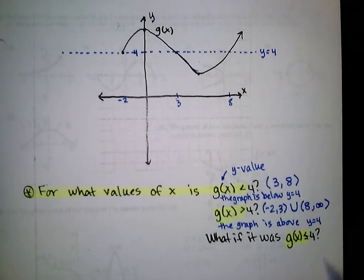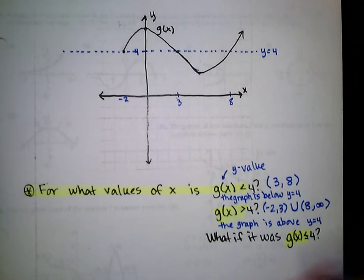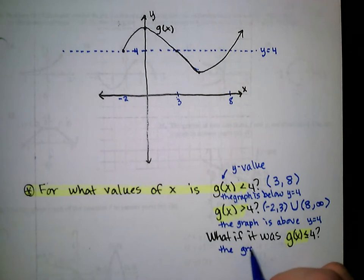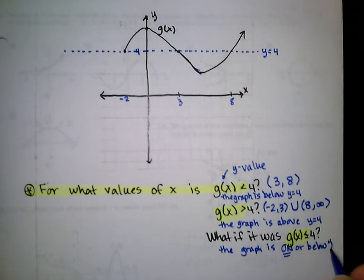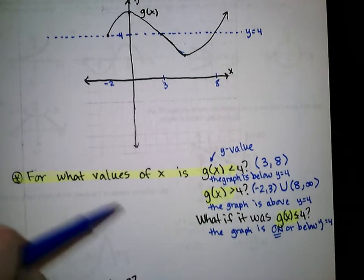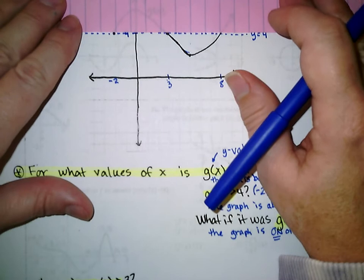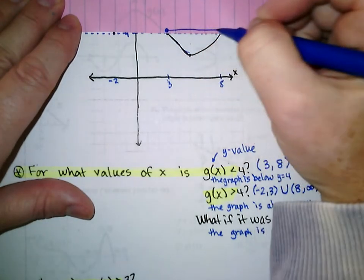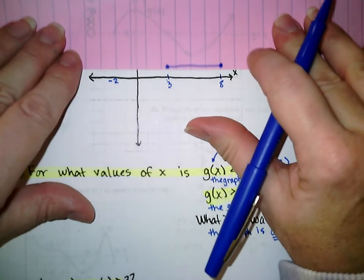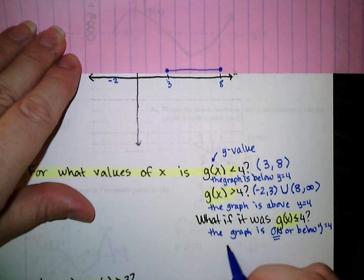What if I changed it to less than or equal to? That would mean the graph is on or below y equals 4. On or below would be from closed circle at 3 over to closed circle at 8, so that makes it from 3 to 8 with closed brackets.